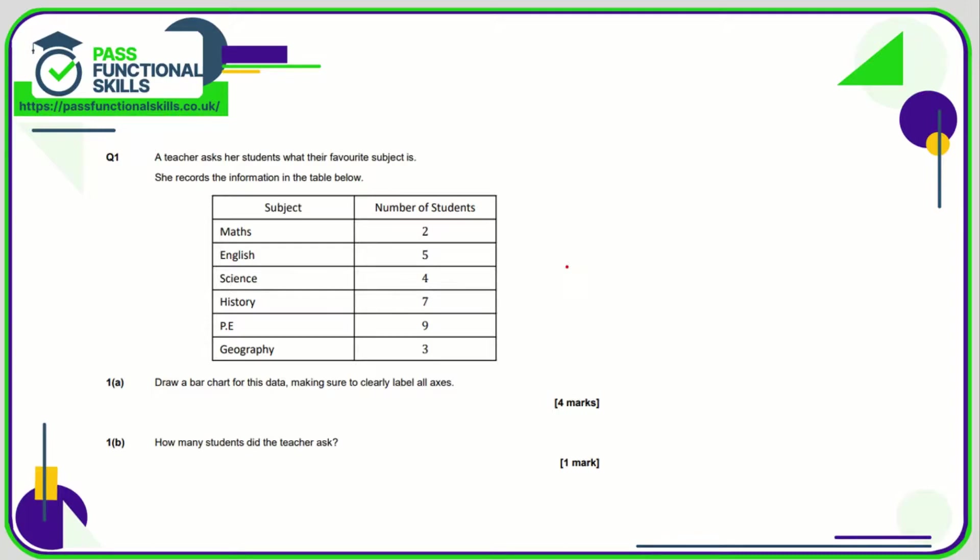If I ask ten students to do this, it's possible I get ten slightly different bar charts, but there are some key characteristics that should all be the same. First, the number of students should be up the side and labeled as number of students. Across the bottom we should have subjects broken down to maths, English, science, history, PE, and geography.